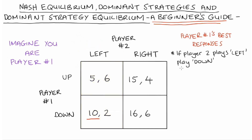If player one and player two plays right, we're on the second column. Player one can play up and get fifteen, or down and get sixteen. So down is the best response for player one to player two playing right, because sixteen is greater than fifteen.